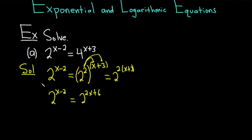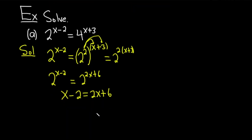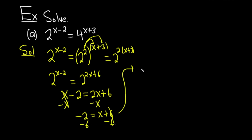Now we're in a really good place because whenever you have the same base on both sides like this, you can drop the bases. And so you get x minus 2 is equal to 2x plus 6. There are a bunch of ways to solve this. I'm going to go ahead and subtract the x. So we have minus 2 equals 2x minus x is x, and then plus 6. We can subtract 6 from both sides, so we end up with x equals minus 8. The answer to this problem is x equals minus 8.